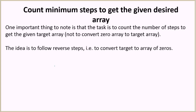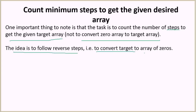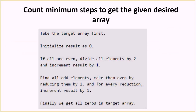The key insight is that we don't need to actually convert the zero array to the target — we just need to count the minimum number of steps. The idea is to follow the reverse steps: convert the target array back to all zeros. If all elements are even, we divide all elements by two and increment the result by one, reversing the doubling operation.